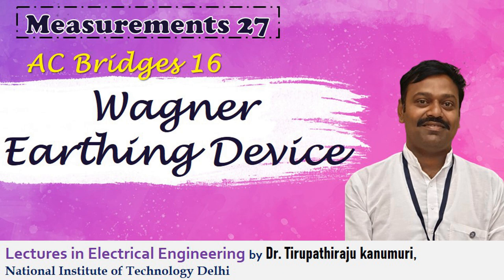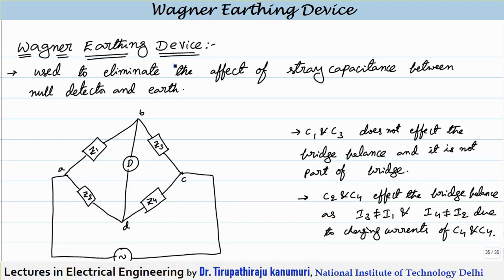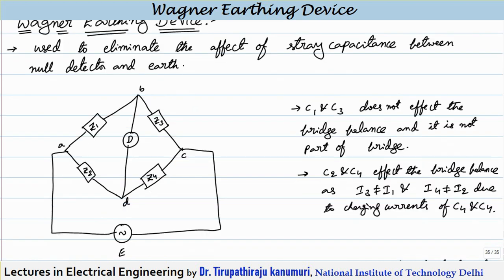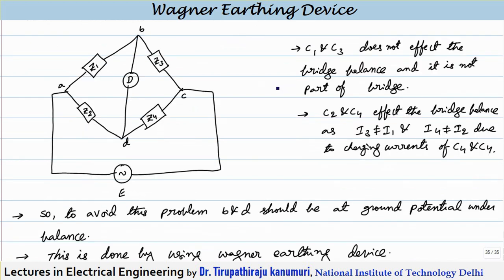Hi all, today we are going to discuss about the Wagner earthing device. This is used to eliminate the effect of stray capacitance between the null detector and the earth. Let us see what stray capacitance to earth is.